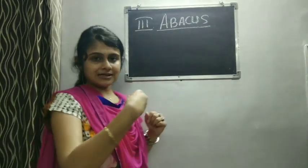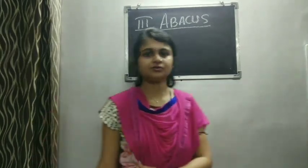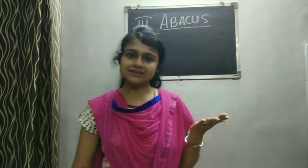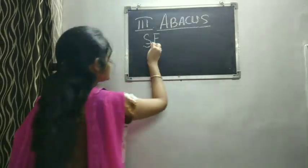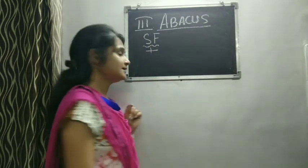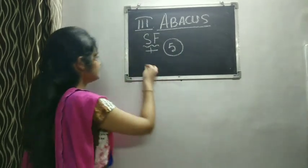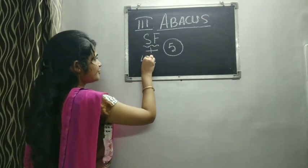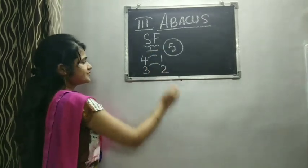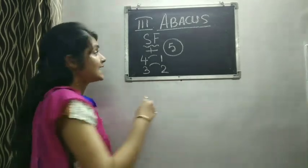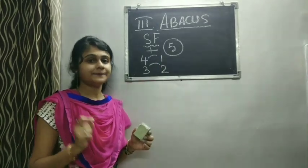Last class, what we have seen? We have done the small friend formula. I hope you all remember the small friend formula - plus and minus both. So when we were doing the plus formula, the small friend plus, what we have seen? The common friend is 5, and the best friends: 4's best friend was 1, 1's best friend was 4, 3's best friend was 2, 2's best friend was 3. And the small friend formula always starts with a plus sign.